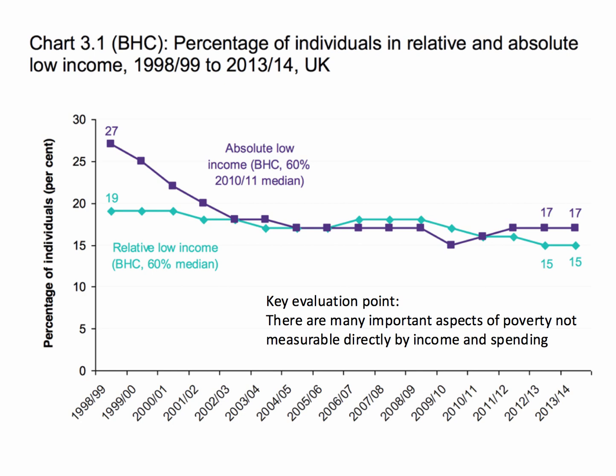But keep in mind that we're measuring relative income here. There are many aspects of the experience of poverty which are not captured by income or spending — such as access to sanitation, political safety and security, the quality of schooling, nutrition, and things like healthy life expectancy — all of which are important in determining the relative living standards of people.